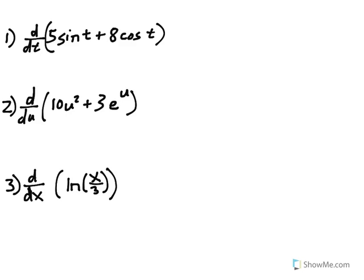Here are three sample problems, all of which can be solved using the identities on the previous page. I'll do solutions in blue. First, always make sure that the symbol in the d/dt or d/dx matches the variable in your equation, because this is the variable you're taking the derivative with respect to. As long as they're all the same, you can proceed. If not, anything other than this variable should be considered a constant.